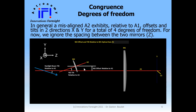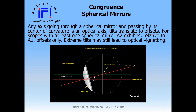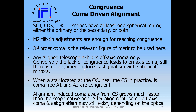We ignore the mirror spacing along the Z axis here because that is addressed in the second alignment step. Something special happens with a spherical mirror: any axis going through it and passing by its center of curvature is an optical axis, which means any tilt translates to an offset. For scopes with at least one spherical mirror, A2 exhibits only an offset relative to A1 — it doesn't matter whether the spherical mirror is M1, M2, or both. Although with large tilt you may also face some vignetting. Therefore, M2 tilt/tip adjustment — typically the tool available to align the telescope — is sufficient to reach congruence.